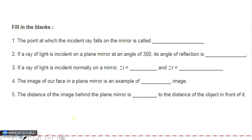Fourth question: the image of our face in a plane mirror is an example of what type of image? This is for the plane mirror — what type of image is formed? It's a virtual image. So the image of the face that you see in your plane mirror is an example of a virtual image.